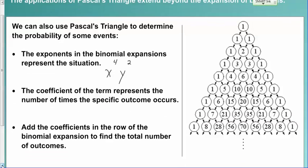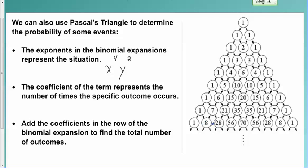And to find the total number of outcomes, what you do is you add up the coefficients of the entire row.